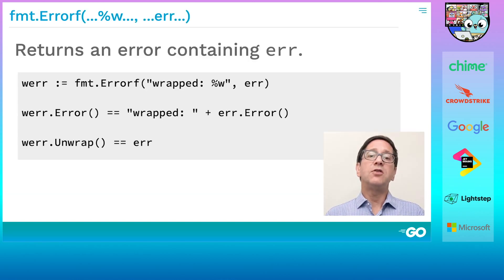The last error wrapping feature is the %w verb of fmt.errorf. When it sees a %w, fmt.errorf returns an error value of some unexported type. That error value has the same message as it would have if you'd written %v or %s. It also wraps the error argument corresponding to the %w.